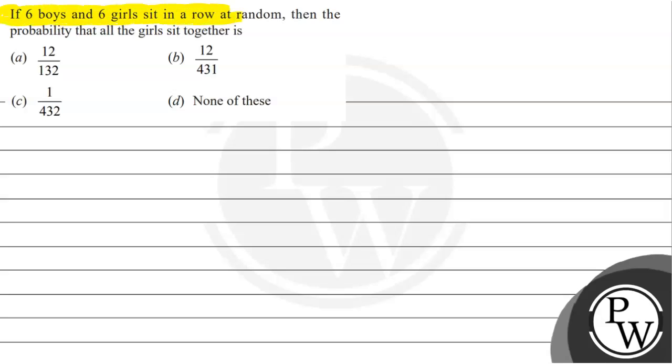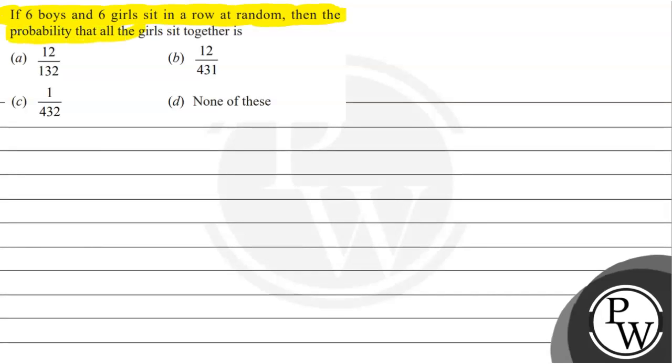If 6 boys and 6 girls sit in a row at random, then the probability that all the girls sit together is: option A is 12 by 132, B is 12 by 431, C is 1 divided by 432, and D is none of these.